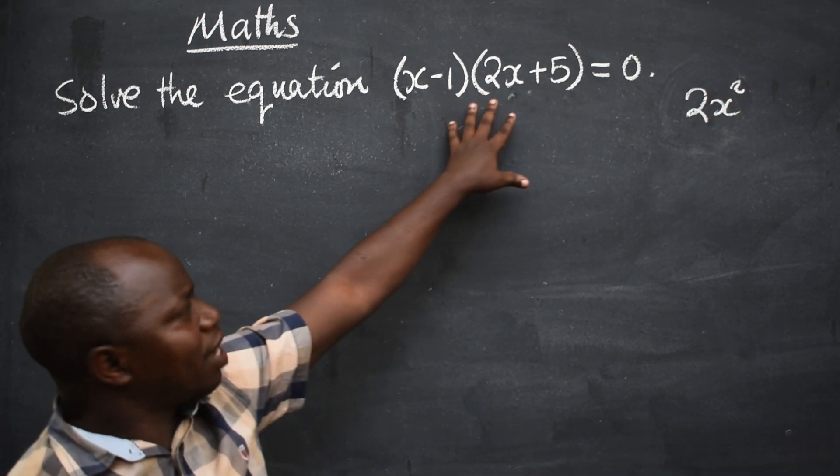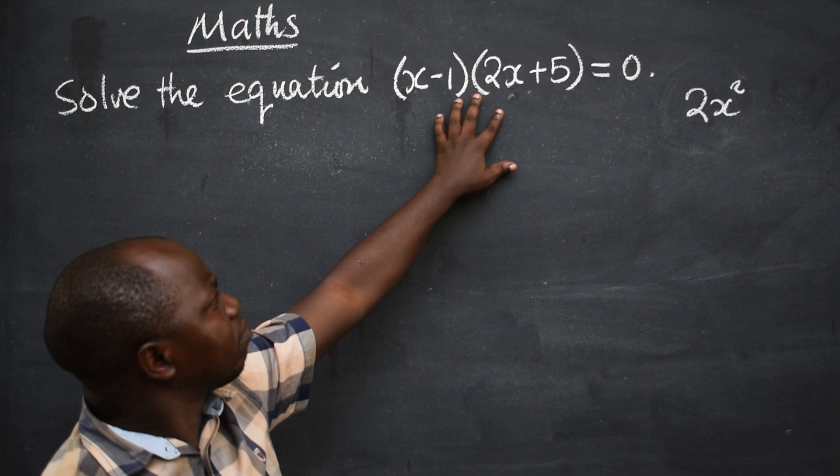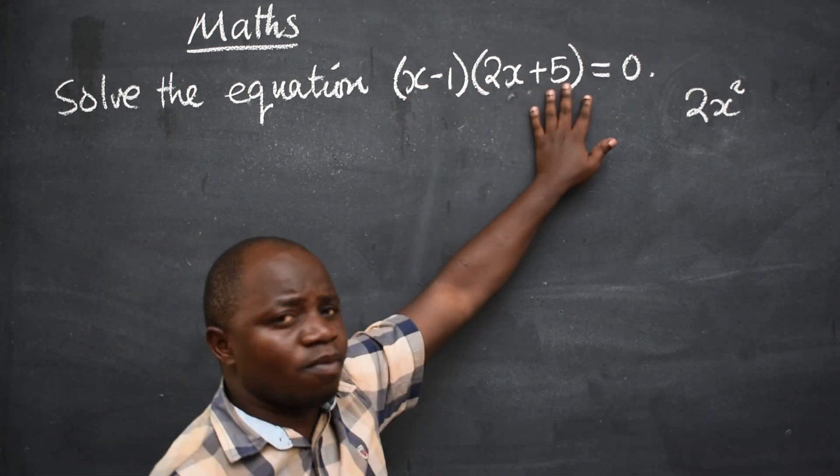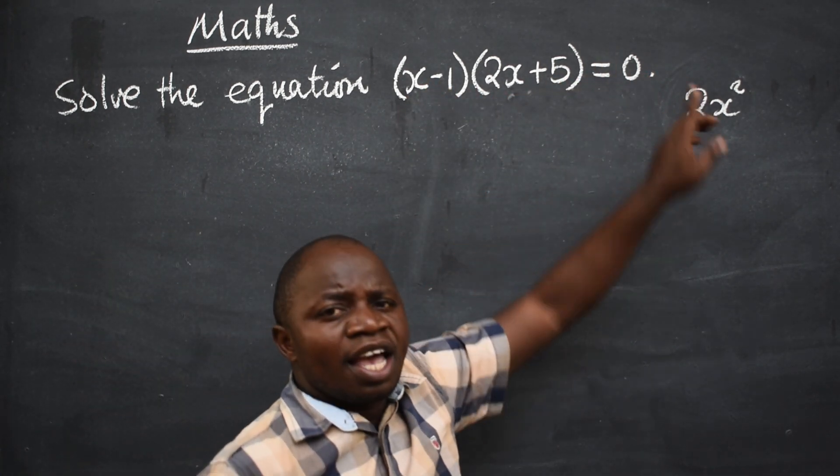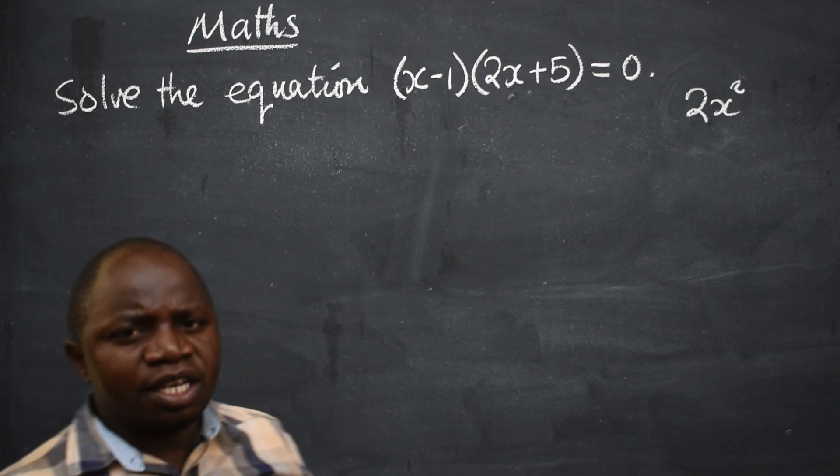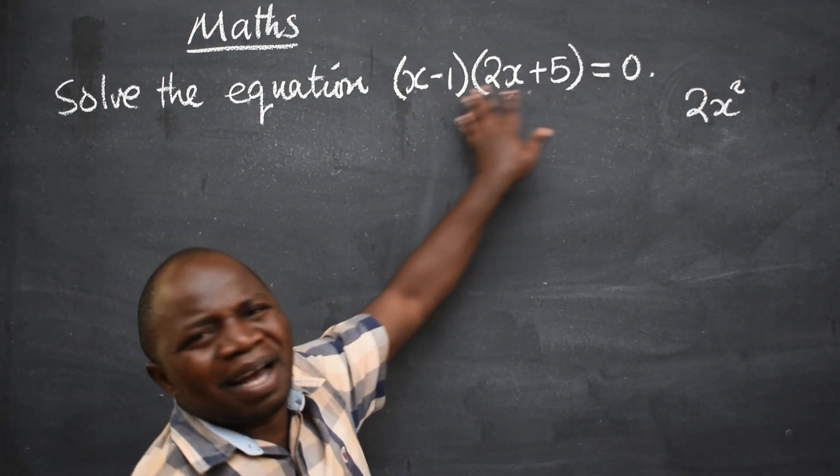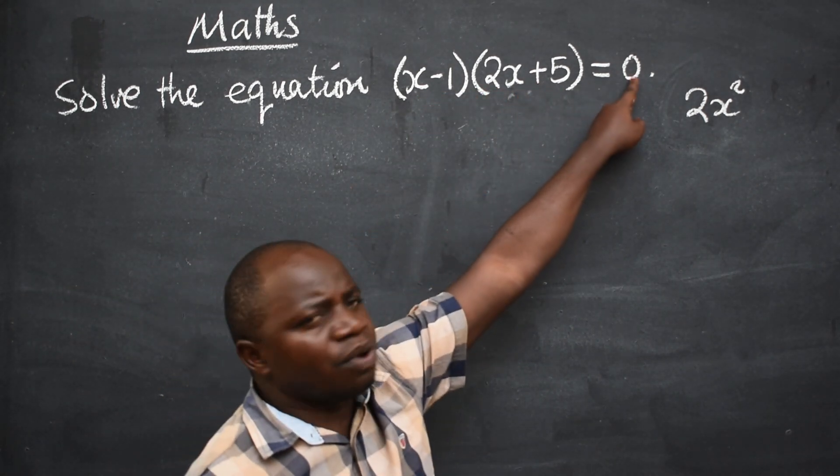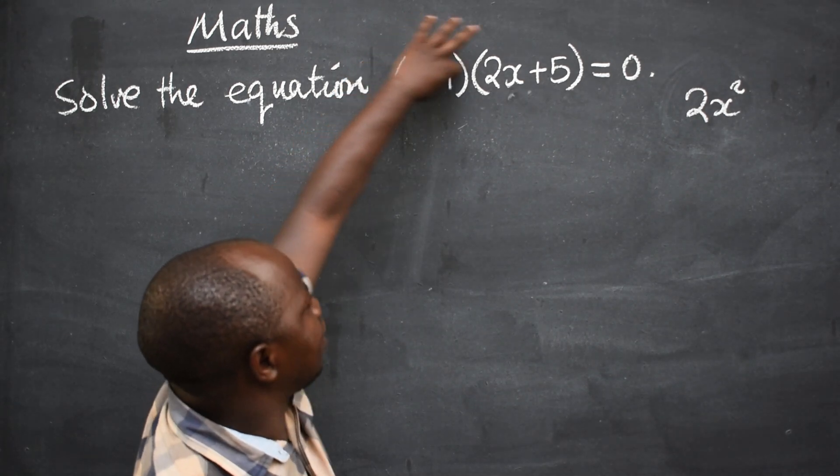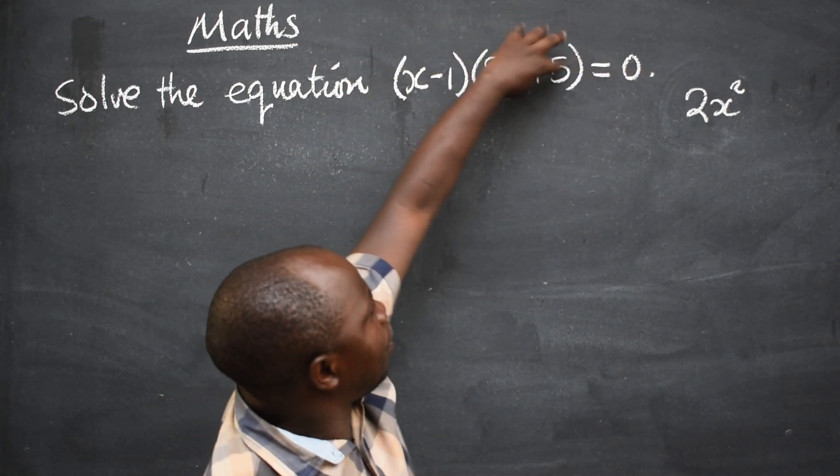So now, whenever you are given such kind of equation or quadratic equation in this form, equate it to 0. There is no point or no need to start expanding this. As long as it is 0, you just get the first bracket, equate it to 0. The second one, equate it to 0.